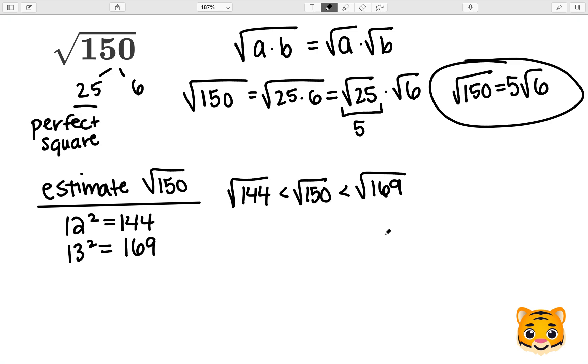Because 12 squared is 144, we can rewrite the square root of 144 as 12. Similarly, because 13 squared is 169, we can rewrite the square root of 169 as 13. Now you can see that the square root of 150 lies between 12 and 13.